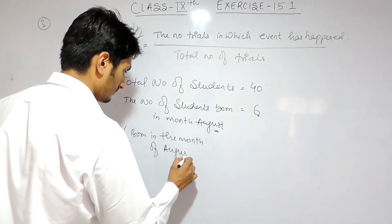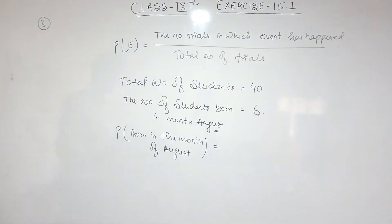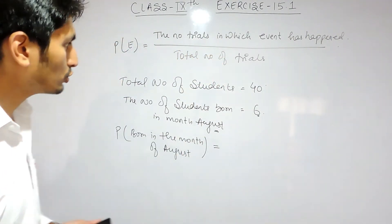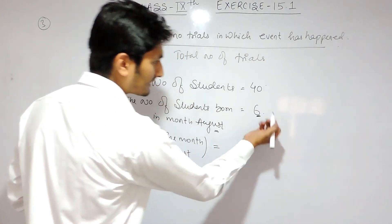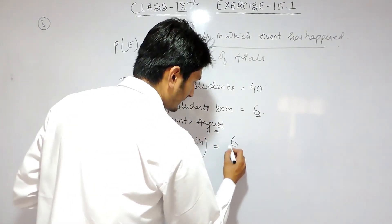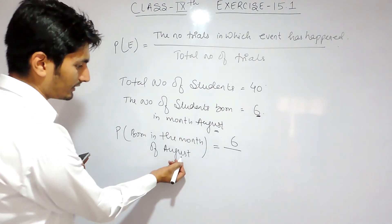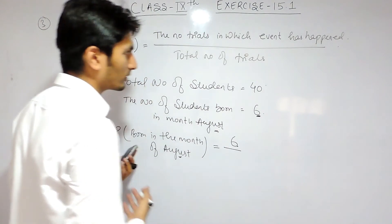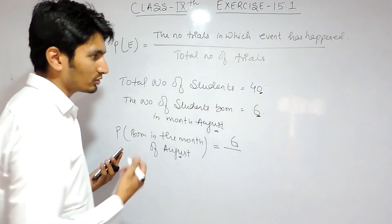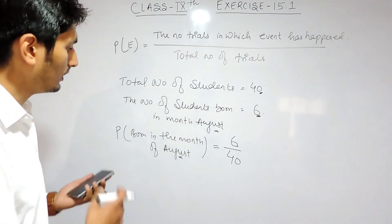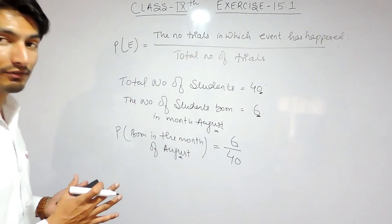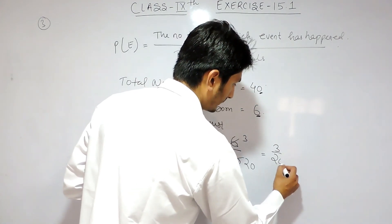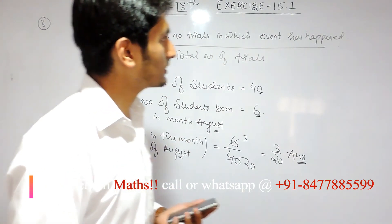So the probability of the event — student born in the month of August — equals the number of trials in which this event occurred, which is 6, divided by the total number of trials, which is 40. Therefore, P(August) = 6/40, and simplifying by dividing both by 2 gives us 3/20. So 3 upon 20 is the answer.